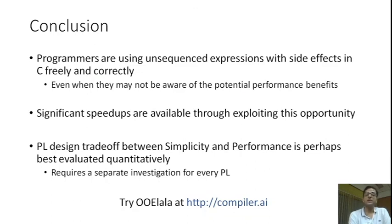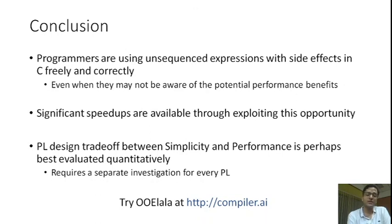To conclude, programmers are using unsequenced expressions with side effects in C freely and correctly, even when they may not be aware of the potential performance benefits. Our work shows that significant speedups are available through exploiting this performance opportunity in C programs. More generally, we think there is a fundamental PL design trade-off between programming simplicity and parallel performance, which we explore quantitatively. While we do this for C, we think this requires a separate investigation for every different programming language. We invite you to try Oolala at compiler.ai. Thank you, and I'm happy to take questions.